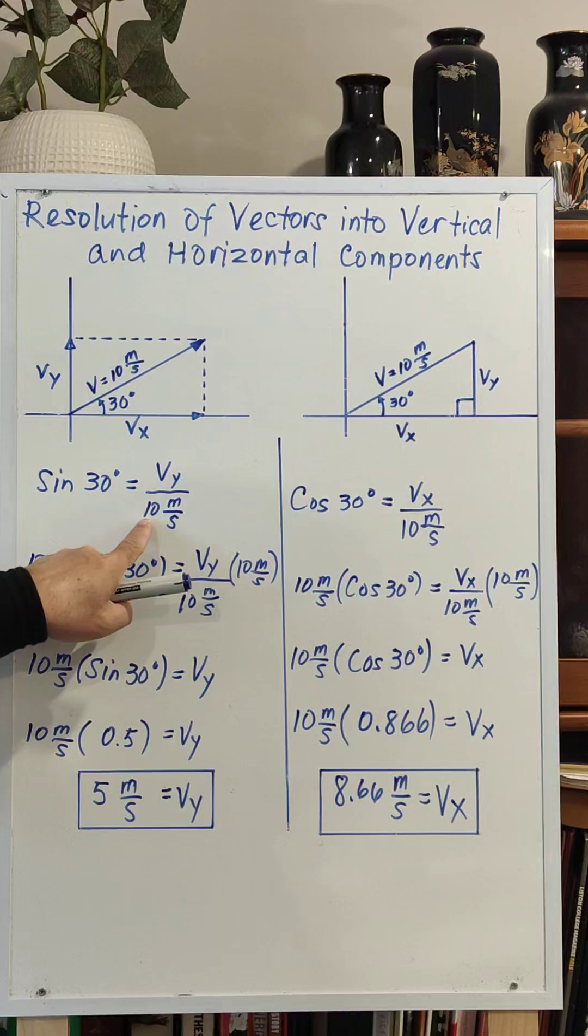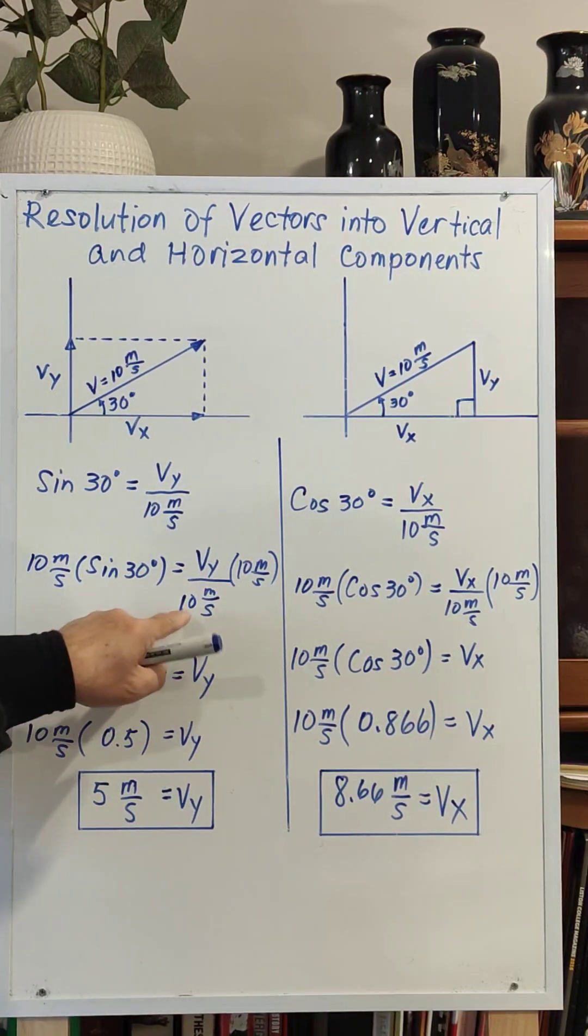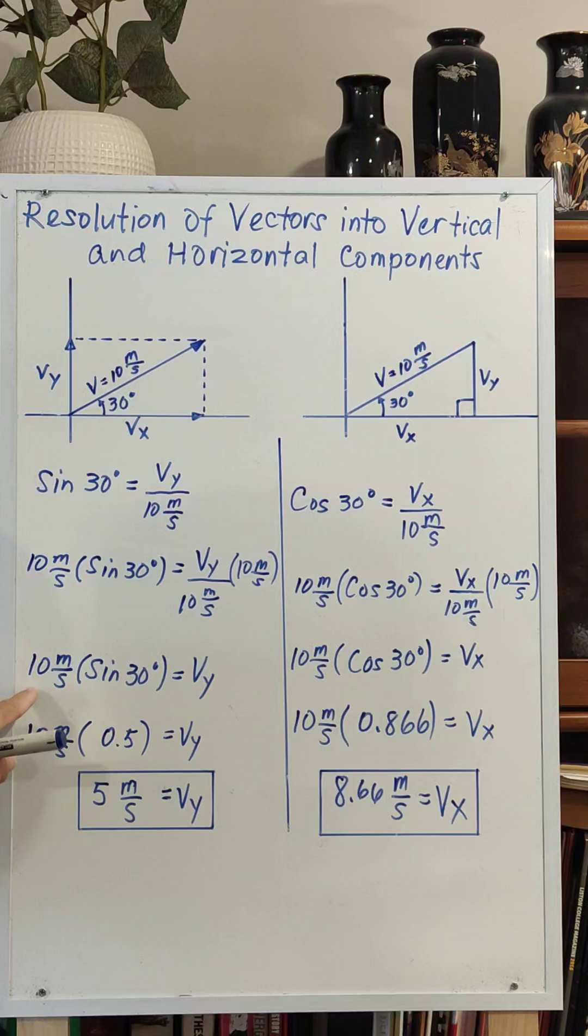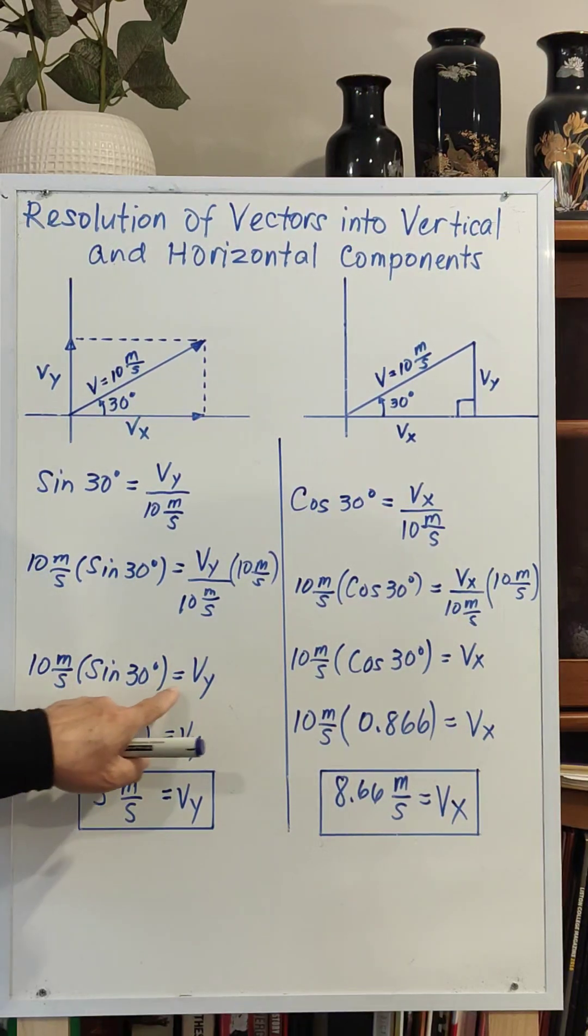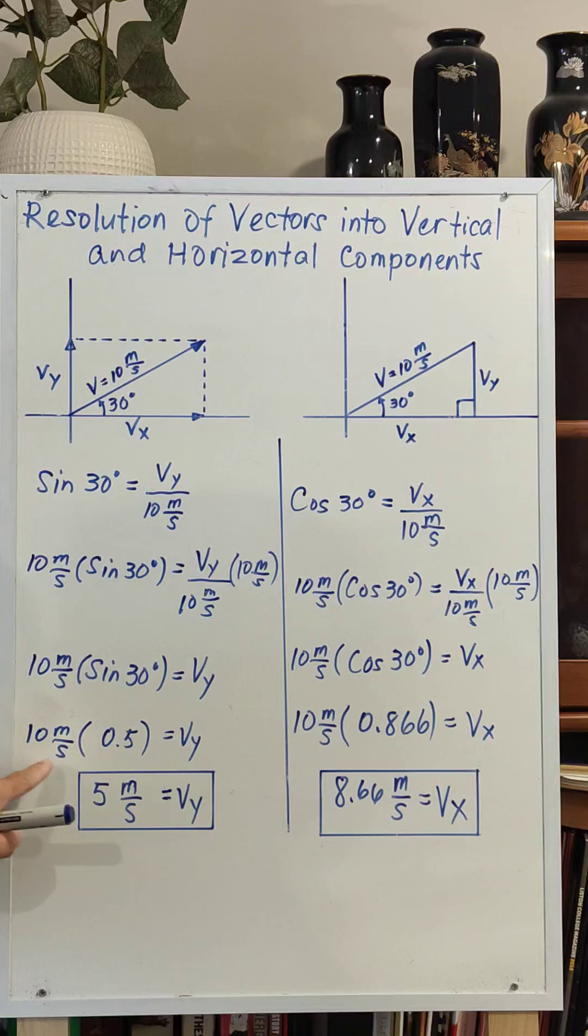Multiplying both sides by 10 meters per second to cancel this, we have 10 meters per second times sine 30 is equal to vy. Sine 30 is equal to 0.5 times 10, which is 5 meters per second. This is your vertical component.